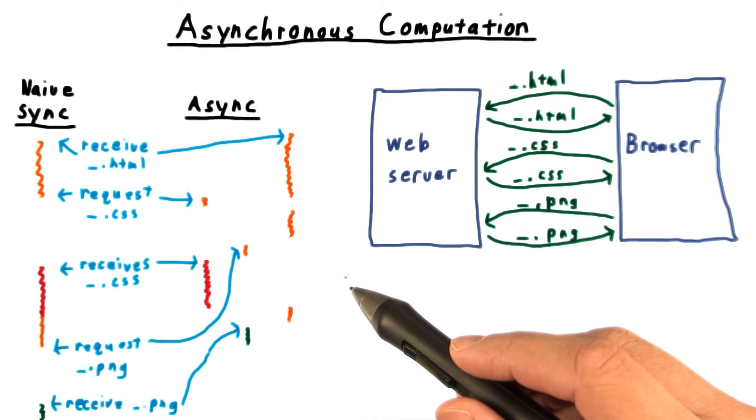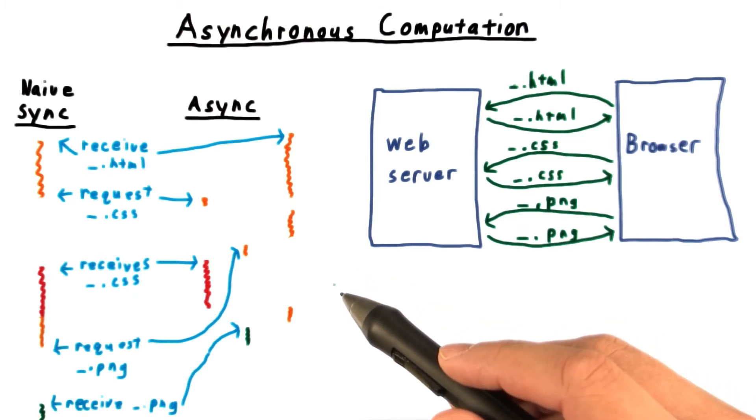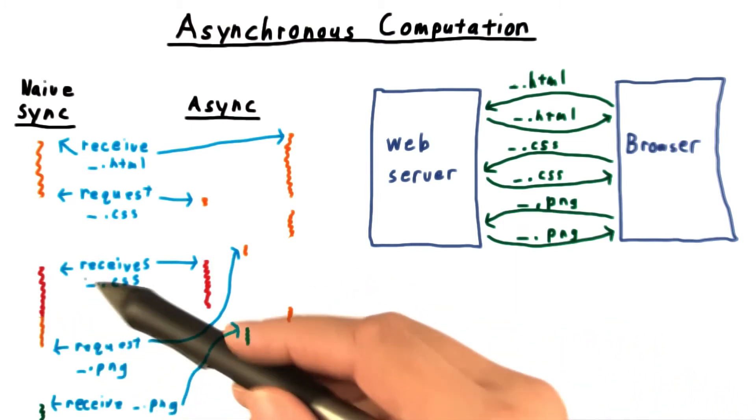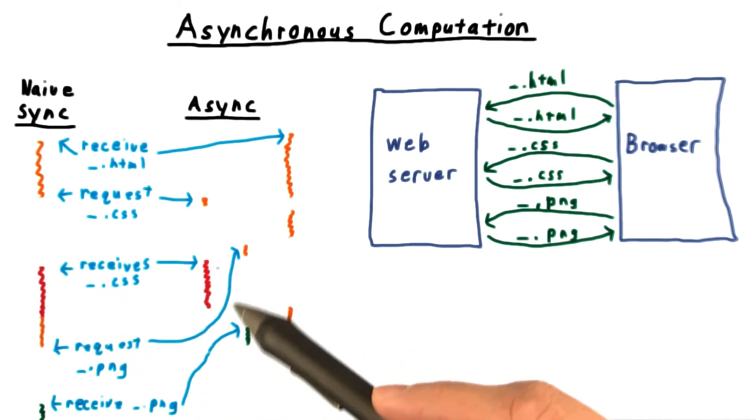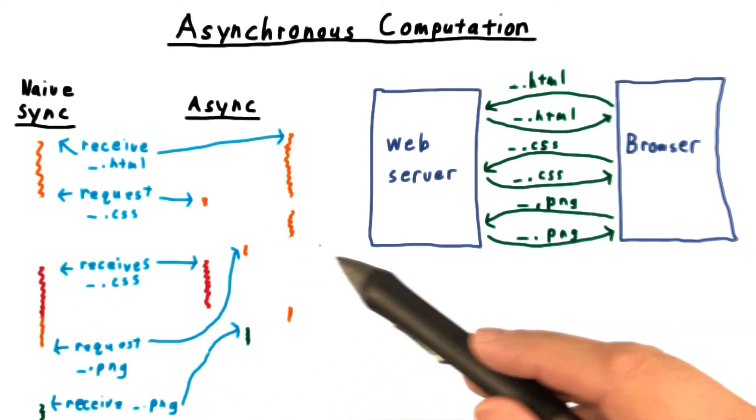Now remember, we're still assuming that we only have one CPU. This means that the computation that the naive approach did, say this red portion here, can't run in parallel with the other parts of the processing.